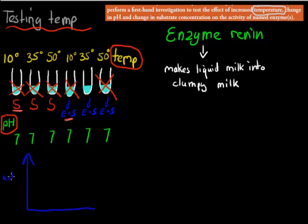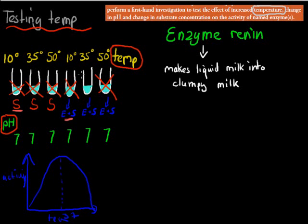On the graph, activity is on the vertical axis and temperature on the horizontal. The optimum is at about 35 to 37 degrees Celsius, giving a bell shape. At 10 degrees it works much worse, and the same at around 50 degrees — the activity drops. Most of the milk changes from liquid to clumpy at 35 to 37 degrees Celsius because renin works best at that temperature.